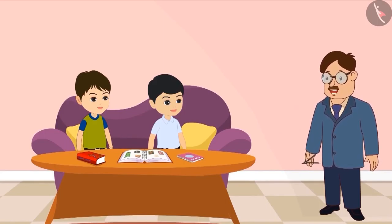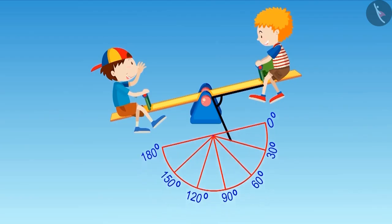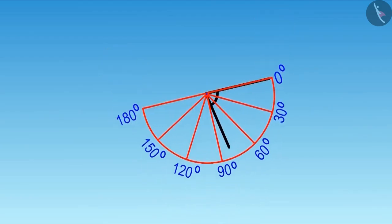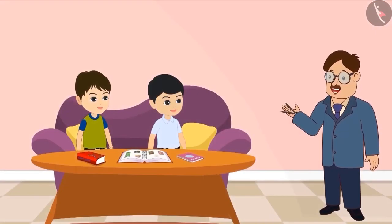To get the correct measurement of the angle of the seesaw, we will place the protractor above the angle like this. See, the measurement of this angle is slightly less than 90 degrees. Did you see, children?